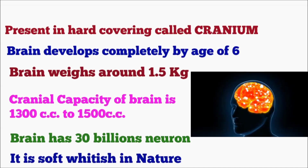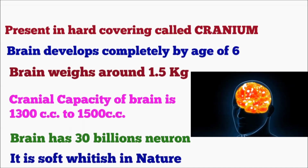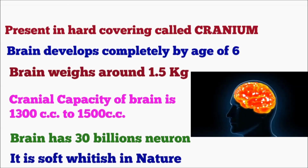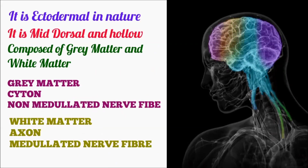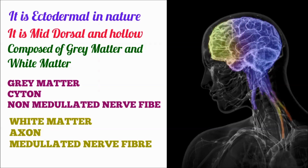The brain is soft and whitish in nature. The structural and functional unit of the nervous system is the neuron — cells which never divide because they have no centrioles. Gray matter has cytone and non-medullated nerve fiber (remember GCN), and white matter has axon and medullated nerve fiber (remember WAM).